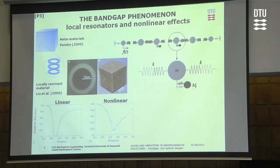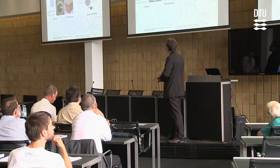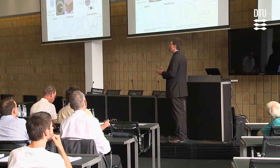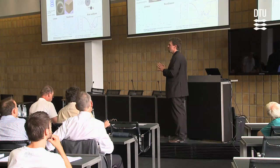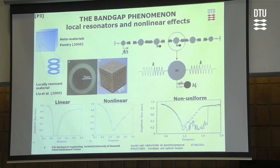We did see some benefits of having a nonlinear spring — we could increase the frequency range over which vibrations are attenuated. But the effect was not very clear, and we saw a lot of noise due to nonlinear wave-wave interactions. We could also see that making the distribution of nonlinear oscillators non-uniform could further increase the frequency range of low-amplitude vibration attenuation.